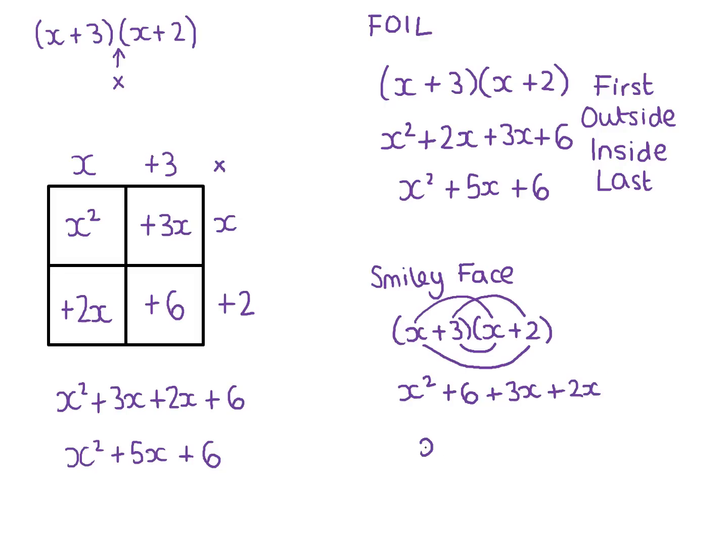So again, we can combine our x terms. We've got x squared plus 6 plus 5x. And although the 6 and the 5x are a different way round to the other two answers, it's still exactly the same because I could just rewrite this as x squared plus 5x plus 6 if I really wanted to.